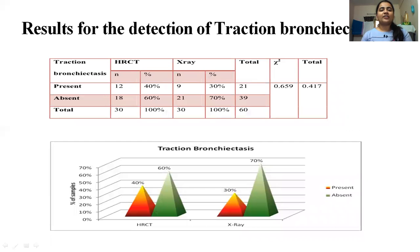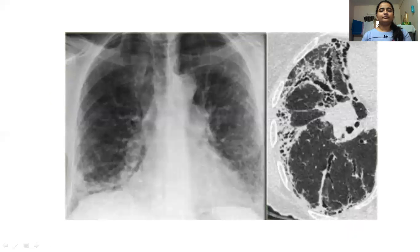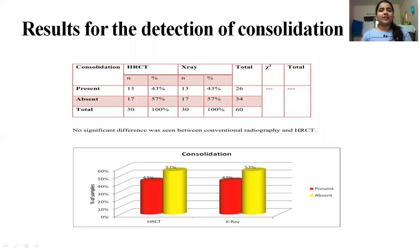For traction bronchiectasis, only 30% could be identified on X-ray while 40% were identified on HRCT.